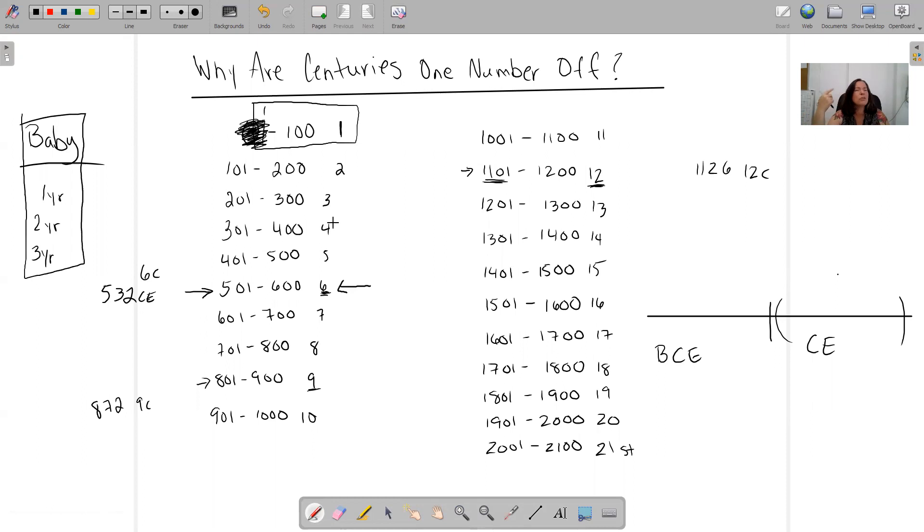Because then you'll remember and you'll be able to go, oh yeah, right. The 600s are seven, the 800s are nine, the 1200s are 13, the 1400s are 15. You'll remember.